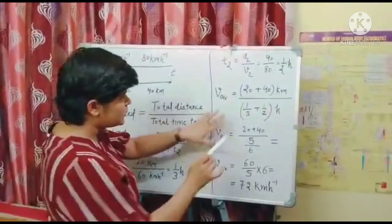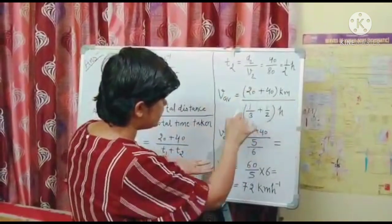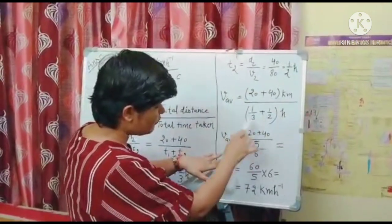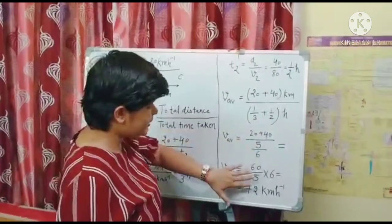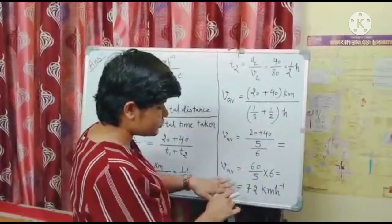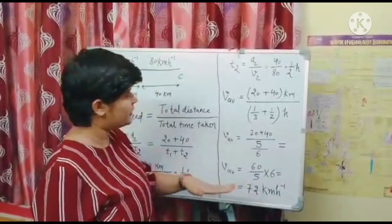Now when we will solve all this, 20 plus 40 divided by the LCM of this whole of this will come as 5 by 6 and it will become 60 by 5 into 6. So the final answer will be 72 km per hour.